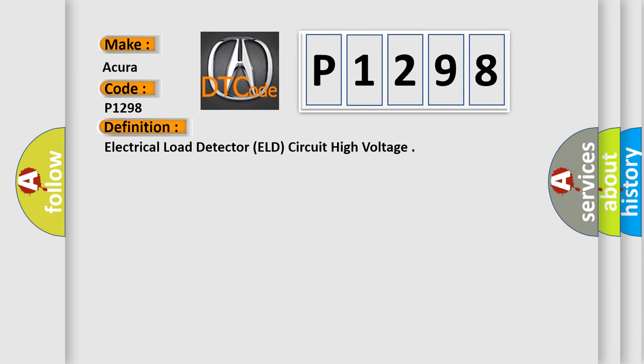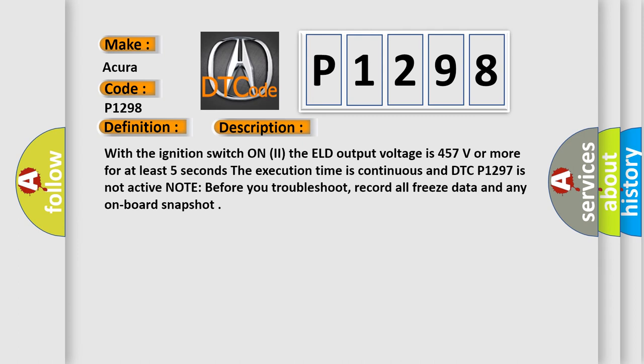Here is a short description of this DTC code. With the ignition switch on, the ELD output voltage is 4.57 volts or more for at least five seconds. The execution time is continuous and DTC P1297 is not active. Note: before you troubleshoot, record all freeze data and any onboard snapshot.